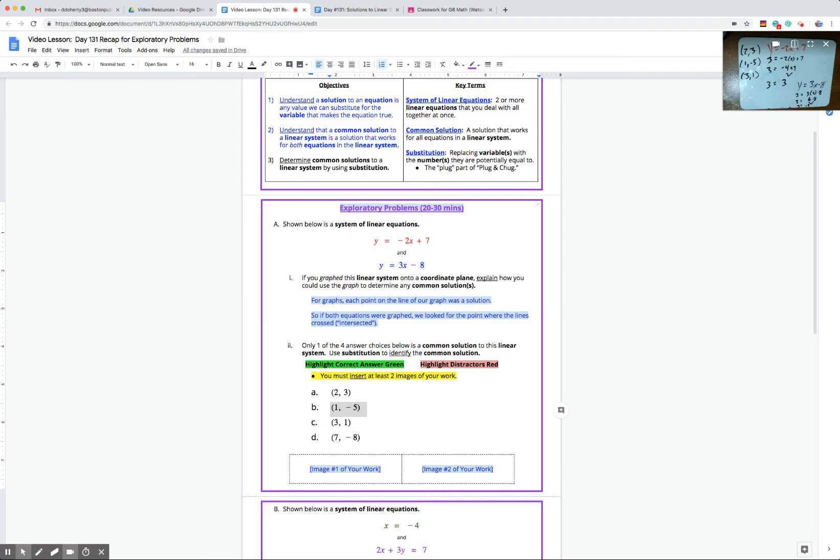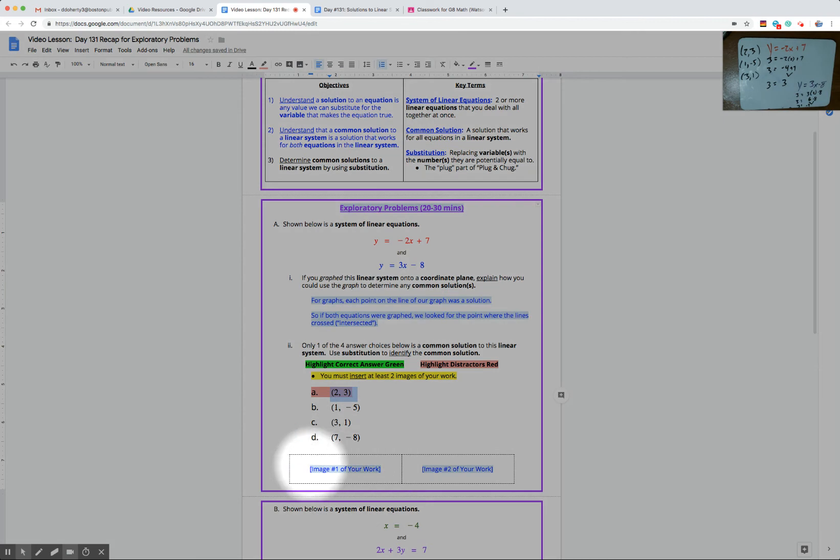So that tells me it's a solution to red, but it's not a solution to the blue equation that we worked with. So as we take a look back at our work, I would be marking A in red as a distractor, and this whiteboard here would be great evidence to be plugging in over here when you need to insert the first image of your work.